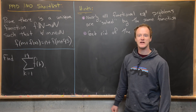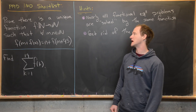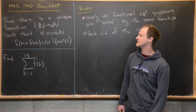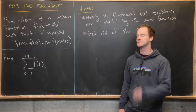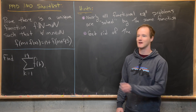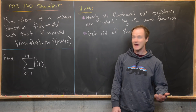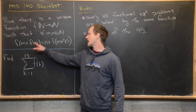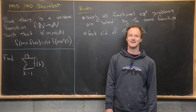Here we're going to look at a nice functional equation problem from the 1995 International Math Olympiad shortlist. Our goal is to prove that there is a unique function from N to N — the natural numbers to themselves, meaning positive integers, not including zero — such that for all m, n in N, we have f(m + f(n)) = n + f(m + 95).